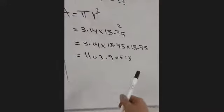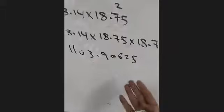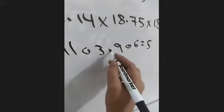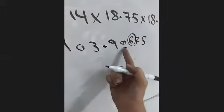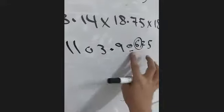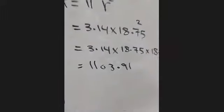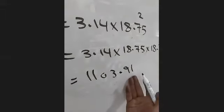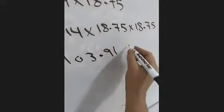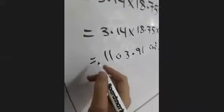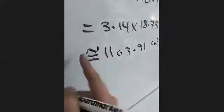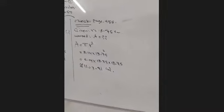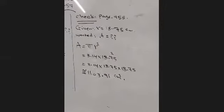The question says round to the nearest hundredth. The hundredth digit is 0; after it is 6, so 0 rounds up to 1. The answer is approximately 1103.91 cm². This is the check for page 458. Now let's go directly to example two.